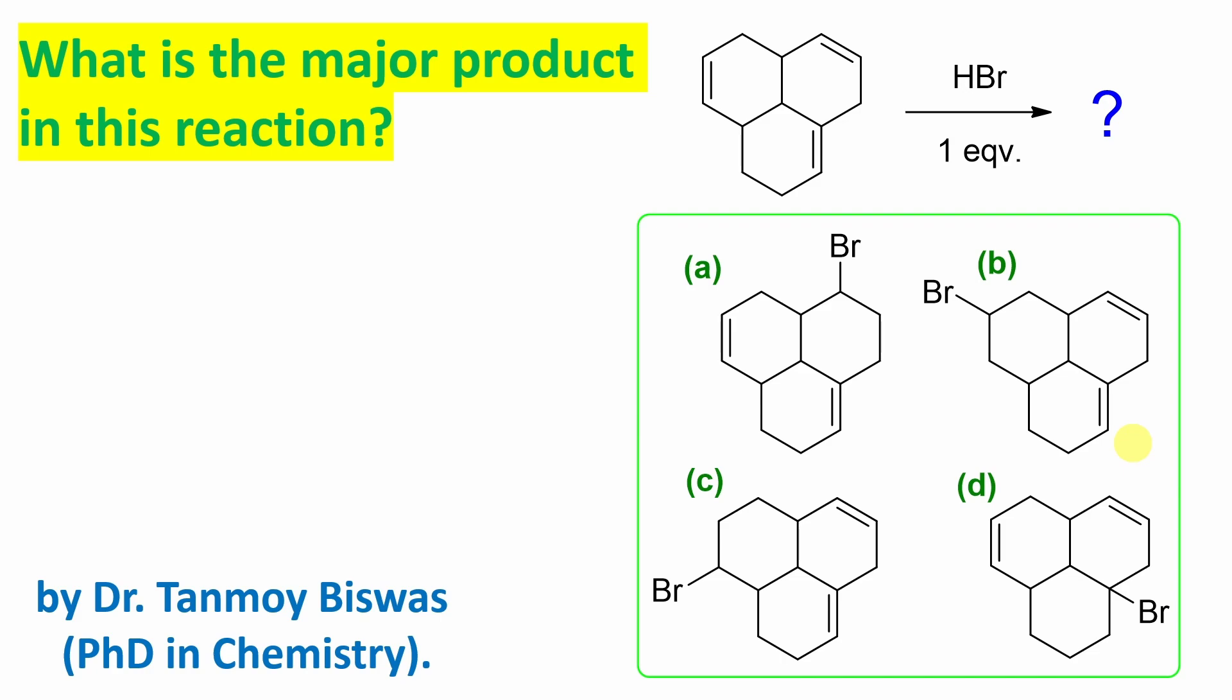So here you can see one molecule, it's a three-member ring, reacts with one equivalent HBr. And if you look at all four options, from there it is clear, it is an example of addition reaction. Now, where the addition will take place, I mean regioselectivity.